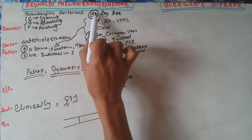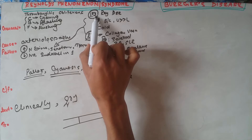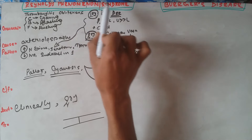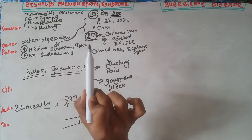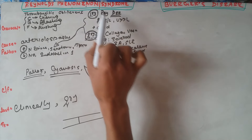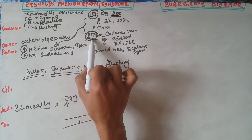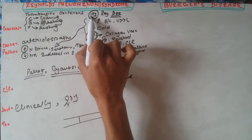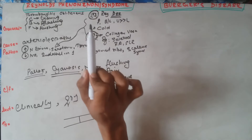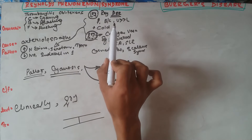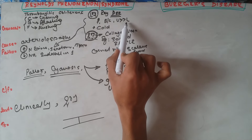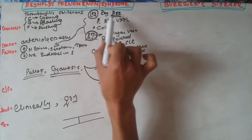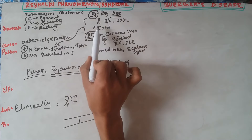Raynaud's phenomenon is divided into primary and secondary types. The primary Raynaud's phenomenon is also known as Raynaud's disease — these are two different things. Raynaud's phenomenon includes both primary and secondary, whereas Raynaud's disease is just the primary type. Primary Raynaud's disease is idiopathic, usually seen in female patients, and bilateral upper limbs are affected whereas the lower limb is very rarely affected.